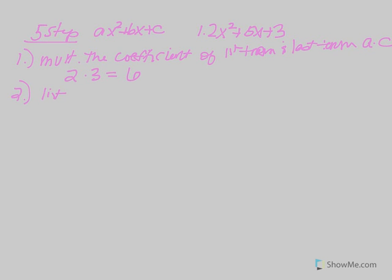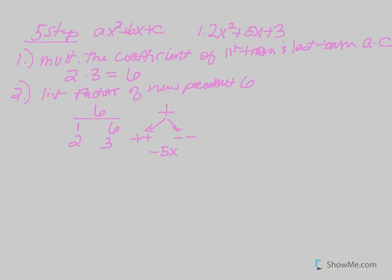Step two is to list the factors of the new product. Listing the factors of 6, making smaller and larger factor pairs: 1 and 6, then 2 and 3. Notice the product is positive, so that's either two positives or two negatives — look to the middle term. The middle term is positive 5x, which means both factors are positive. The factors that add up to 5 are 2 and 3.